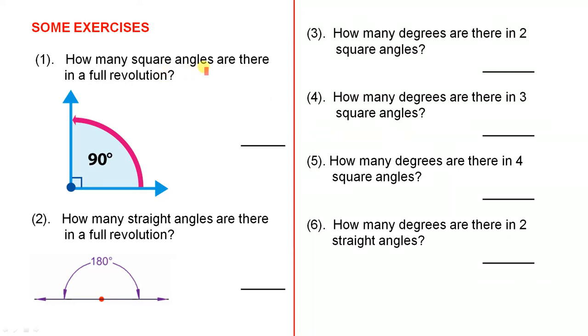So the first one. How many square angles are there in a full revolution? Now you know that a square angle is 90 and you know that a full revolution is 360. So that will enable you to answer that one.